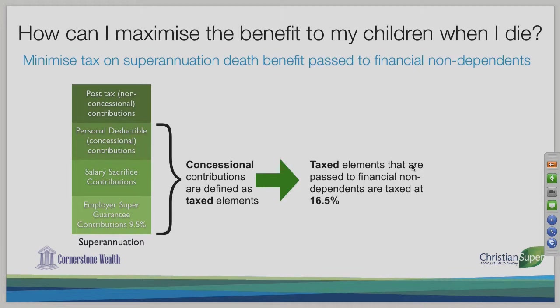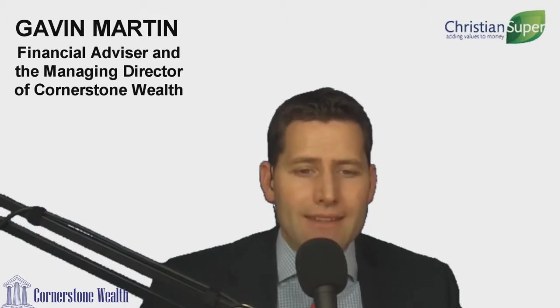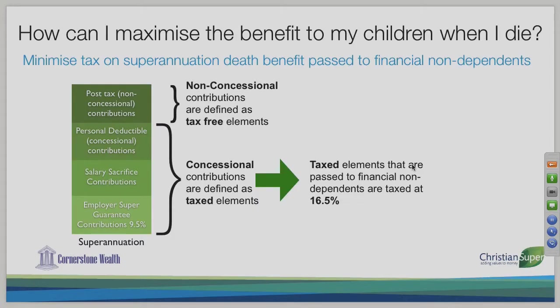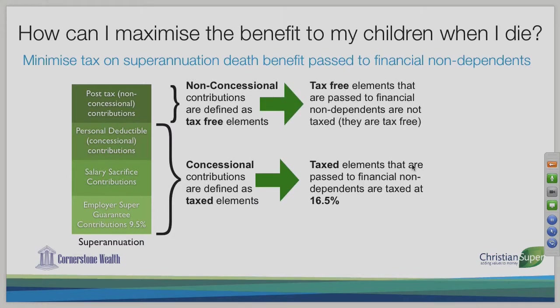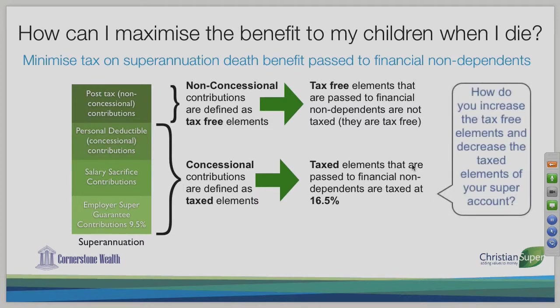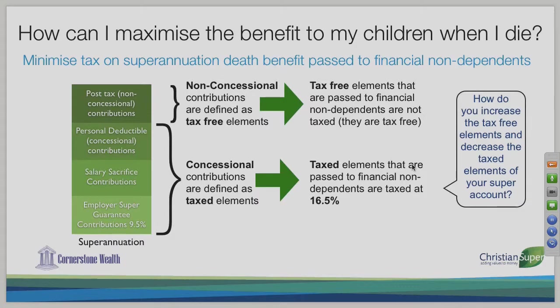Post-tax contributions — money you put in after you've already paid tax on it — are different. For example, if you've sold an investment property, paid the tax on the capital gain, and have $100,000 left, putting that into super as a non-concessional contribution defines it as a tax-free element. If those components transfer to a non-dependent on your death, they're completely tax-free. The question then becomes: how do you increase the tax-free elements and decrease the taxed elements?